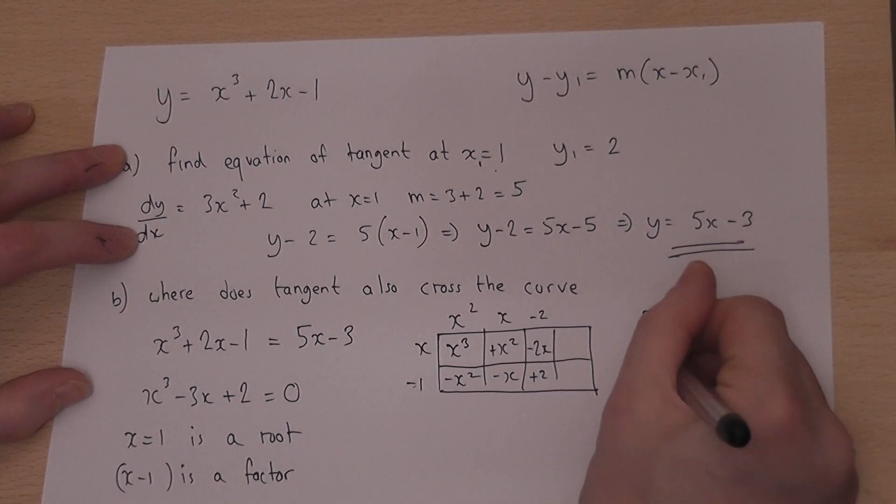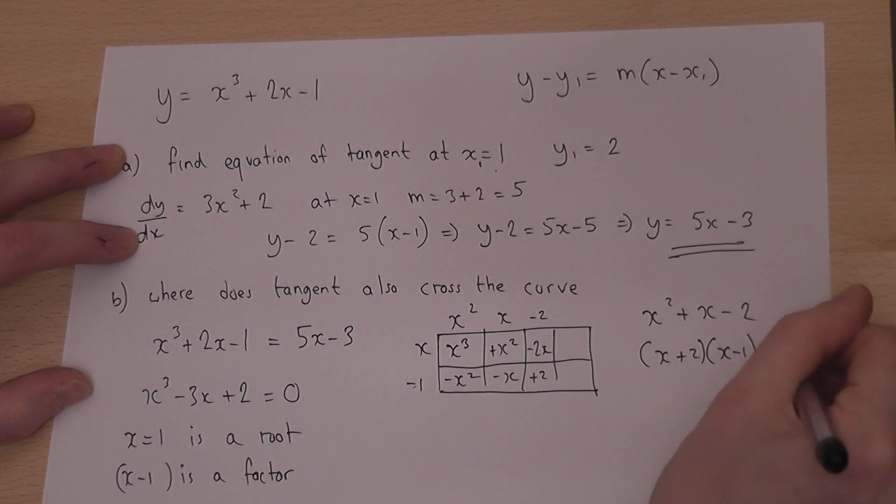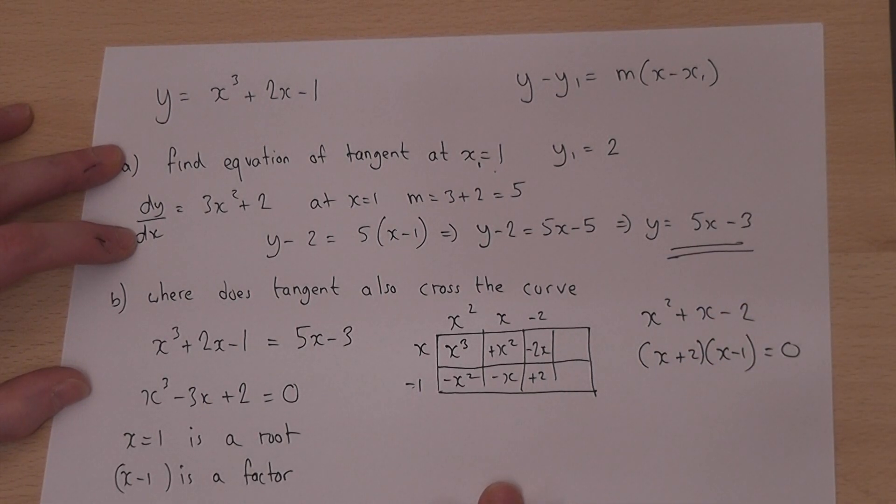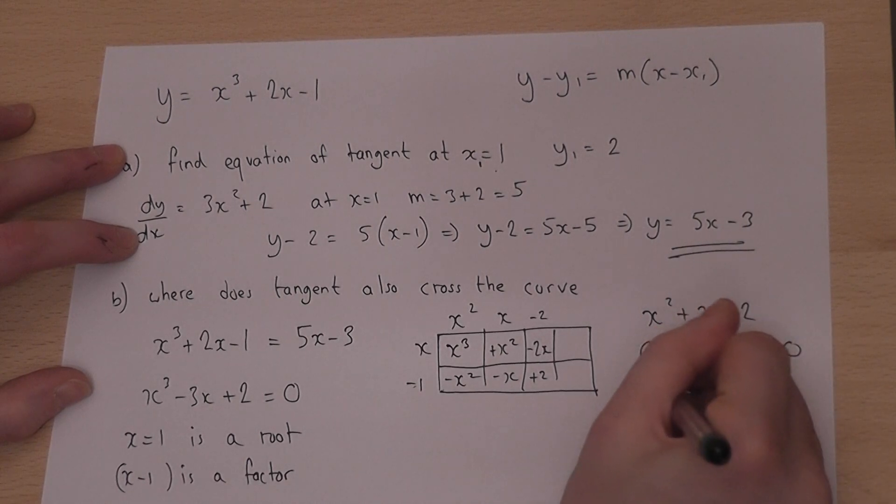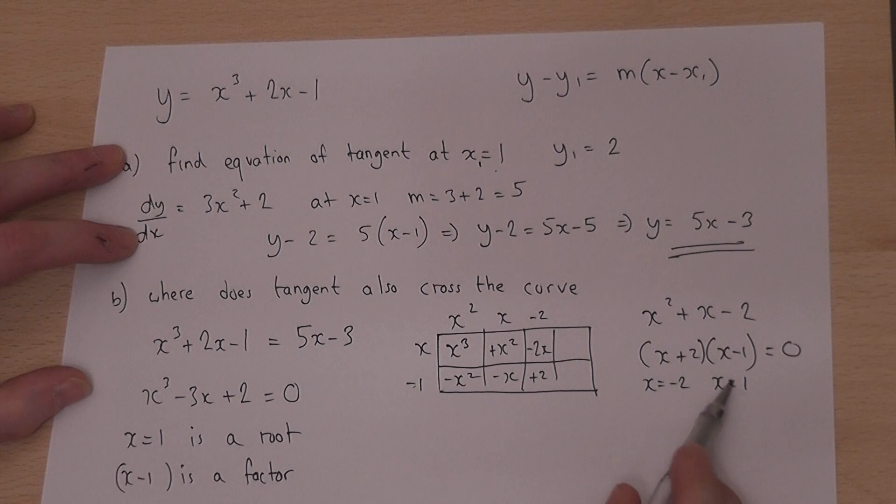This factorizes to x plus 2 and x minus 1 equals 0. So the other solutions are x equals minus 2 or x equals 1. Well, x equals 1 is still the tangent.